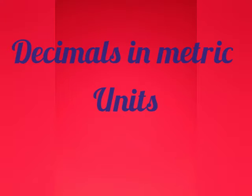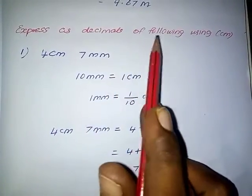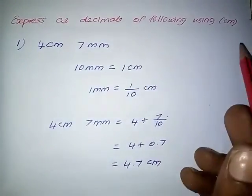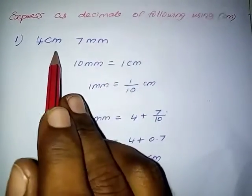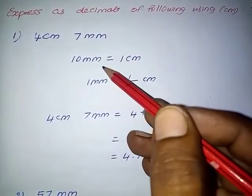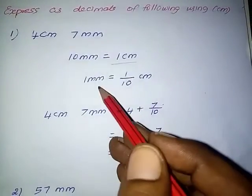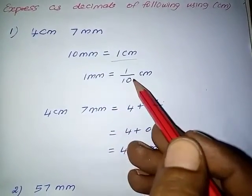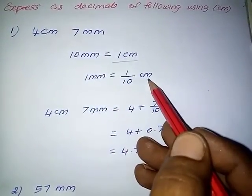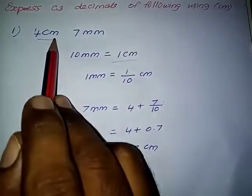Hi students, this is Kaditvel Max, teacher grade 6. Express as decimals the following using centimeter. Question number 1: 4 centimeter 7 millimeter. Already we know 10 millimeter equal to 1 centimeter. From that, 1 millimeter equal to 1 by 10 centimeter.